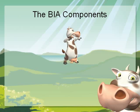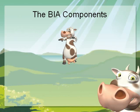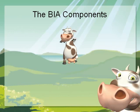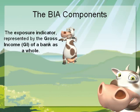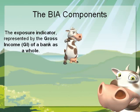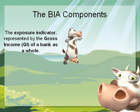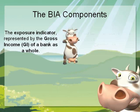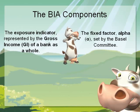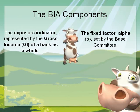The operational risk capital charge under the basic indicator approach is based on two components. The first component is the exposure indicator, represented by the gross income of a bank as a whole. The second component is the fixed factor, represented by alpha, set by the Basel Committee.